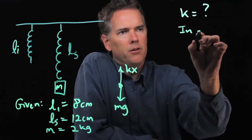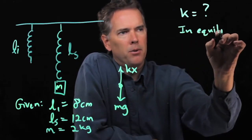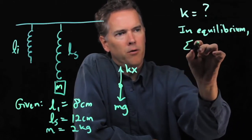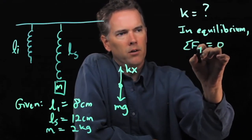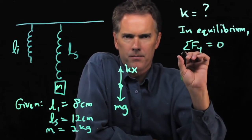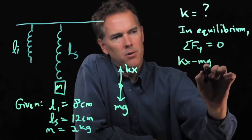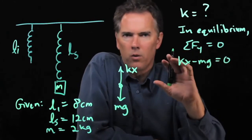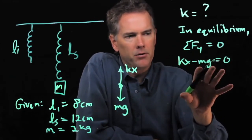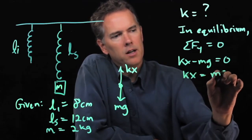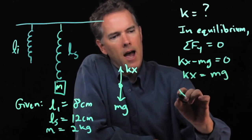Now, if this is in equilibrium, it's just hanging there, not bouncing up or down anymore, then we know that the sum of the forces in the y direction has to be equal to zero. kx is going up, mg is going down. Those are the only two forces, so they have to add up to zero. And now we can solve this for x.